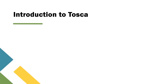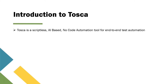Tosca is a scriptless, AI-based, no-code automation tool for end-to-end test automation. In Tosca, without writing a single line of code or script, you can automate any type of application — be it a web application, a mobile application, a desktop application, or you can also automate API-based applications.